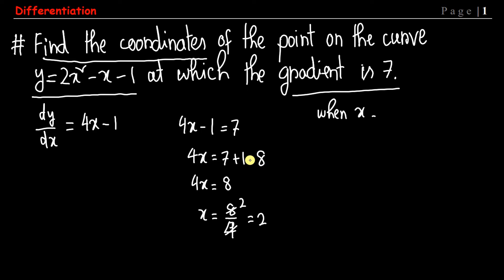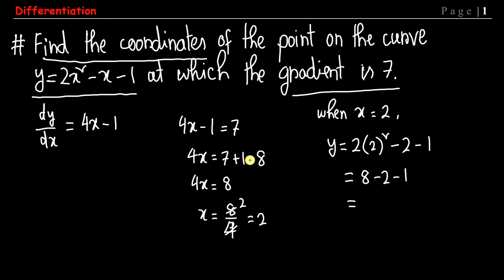When x equals 2, the value of y is found by substituting into the expression: 2(2)² minus 2 minus 1, which gives 8 minus 2 minus 1, that is 8 minus 3, which equals 5. So our coordinate is (2, 5). This is our answer to this question.